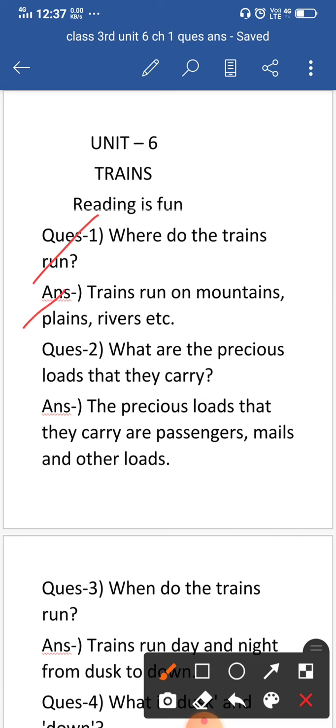So the answer is trains run on the mountains, plains, rivers etc. So jo poem bataya gaya hai ki jo train hai wo kaha kaha chalti hai? Wo mountain pe chalti hai, plain pe chalti hai, river pe chalti hai, okay?